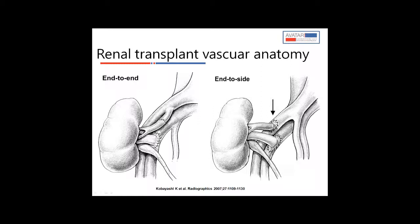When a donor renal artery is anastomosed to a recipient's artery, it is done in two ways. One is called end-to-end anastomosis, in which the donor renal artery is anastomosed end-to-end to the recipient's internal iliac artery. This results in a graft renal artery with three segments: a pre-anastomotic segment which is the recipient's internal iliac artery, a post-anastomotic segment which is the donor artery, and an anastomotic segment.